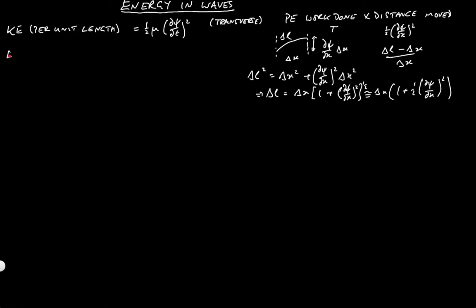So the total energy density, the total energy per unit length, which we might write as w is equal to a half mu dpsi by dt all squared plus a half t the tension dpsi by dx all squared.